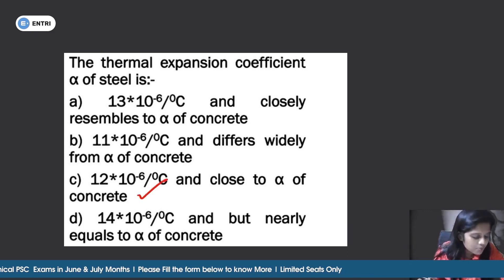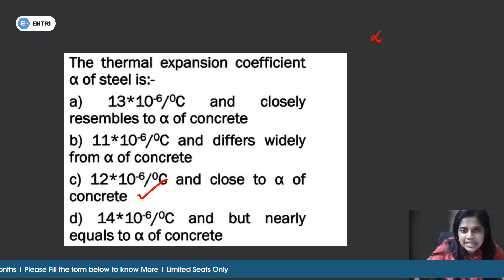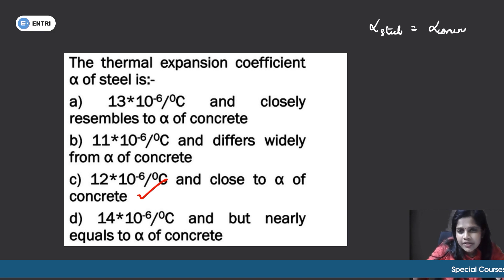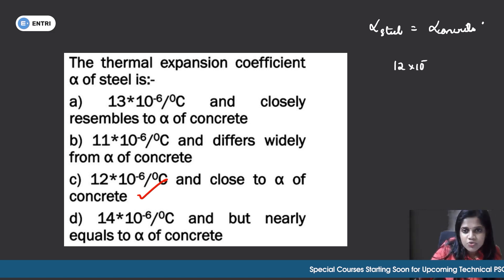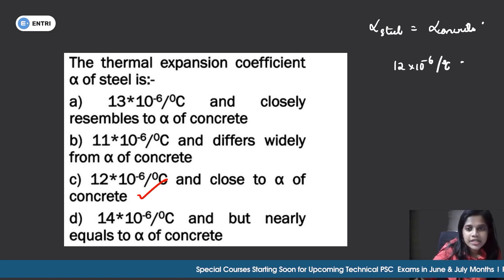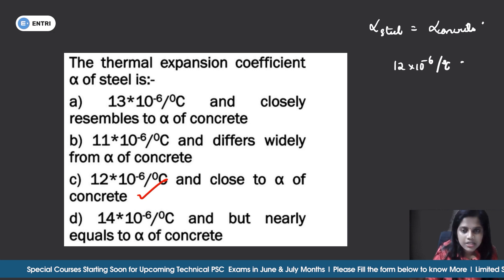The correct answer is that the thermal expansion coefficient of steel is 12×10⁻⁶ per degree Celsius. Both steel and concrete have equal thermal expansion values of 12×10⁻⁶ per degree Celsius. This is why steel reinforcement works well inside concrete.